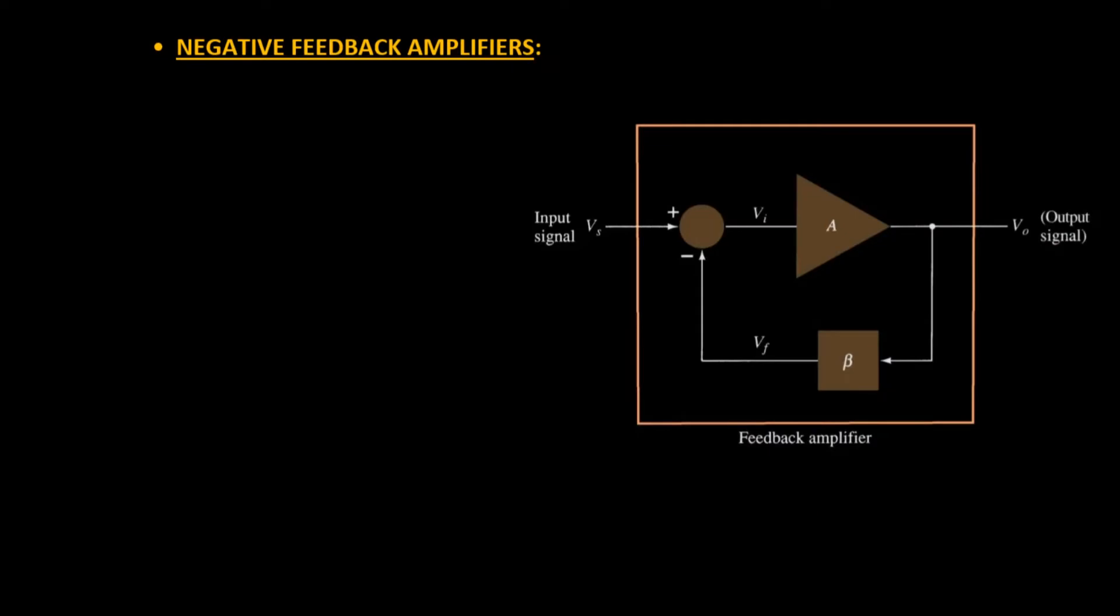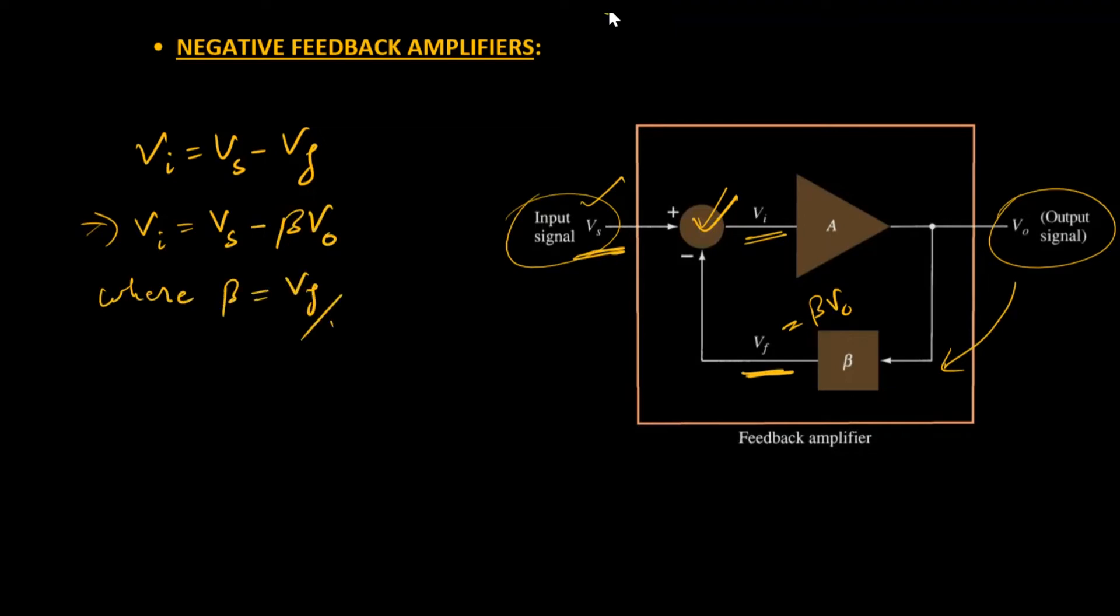This is the same negative feedback amplifier circuitry where Vs is the input signal. Vi is what we are getting after subtraction of Vs and Vf, and V0 is the output signal, a fraction of which is being fed through beta to this mixer. So mathematically, Vi equals Vs minus Vf. And what is the value of Vf? That is equal to beta times V0. So this equation I can write alternatively as Vs minus beta times V0, where beta is VF over V0.